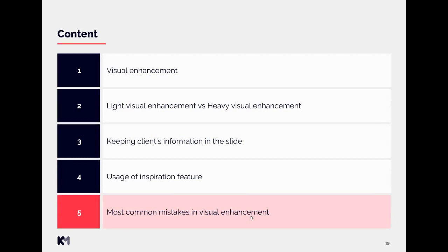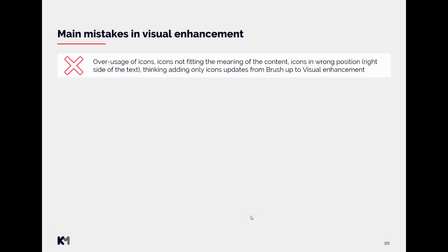As the last point, we will look at the most common mistakes in visual enhancement. The first is over-usage of icons, or icons not fitting the meaning of the content, or icons in the wrong position. The right side of the text is not the correct position — icons have to lead the text and therefore be on the left. Also, thinking that adding only icons upgrades a brush-up to visual enhancement is not correct; this can only be used in light visual enhancement. Another mistake is over-usage of additional lines and shapes.